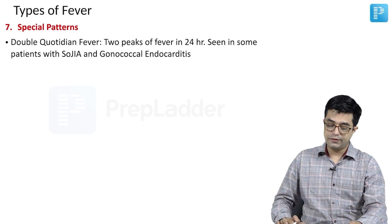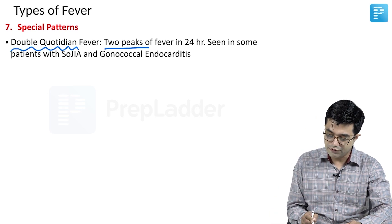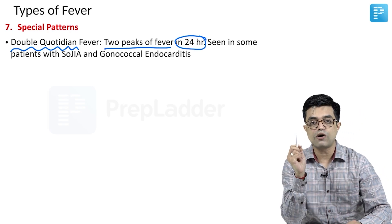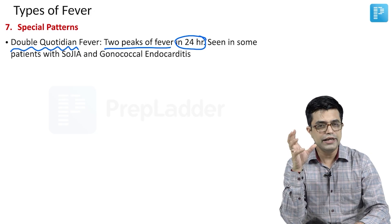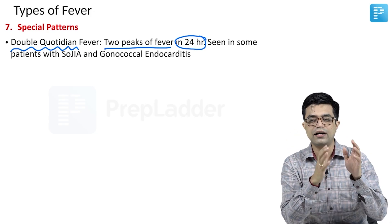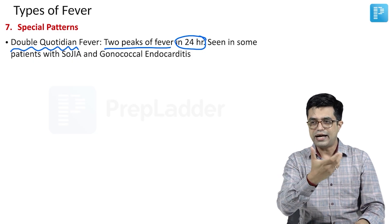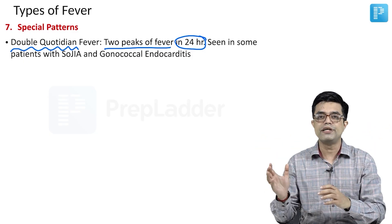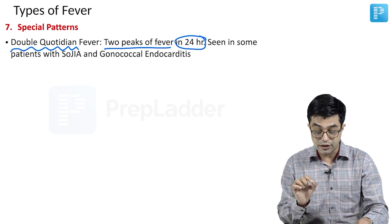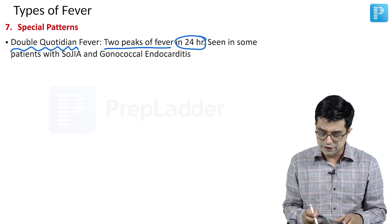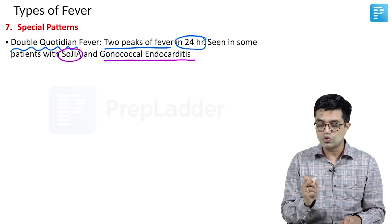Next, we have special patterns of fever. Double quotidian fever means two peaks of fever occur within 24 hours. This is different from the camelback pattern, where the two spikes need not occur within 24 hours — they occur during the same illness but with a variable gap between them. In double quotidian fever, within 24 hours there will be two peaks occurring regularly. It is described in some patients with systemic onset JIA and in the infectious condition gonococcal endocarditis.